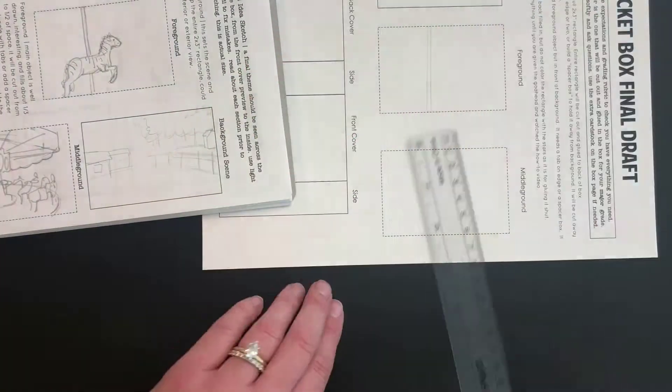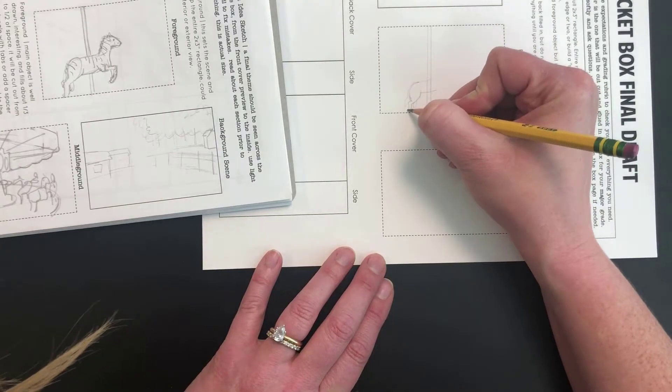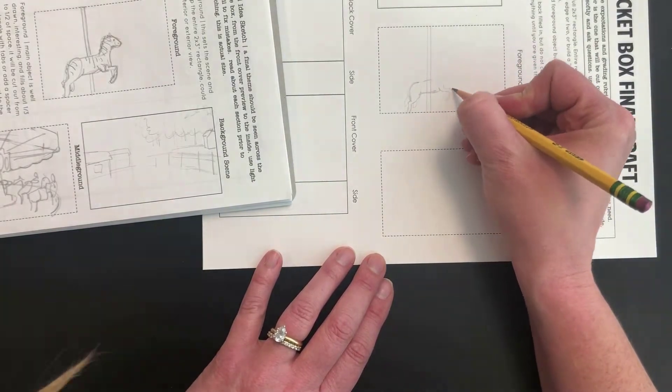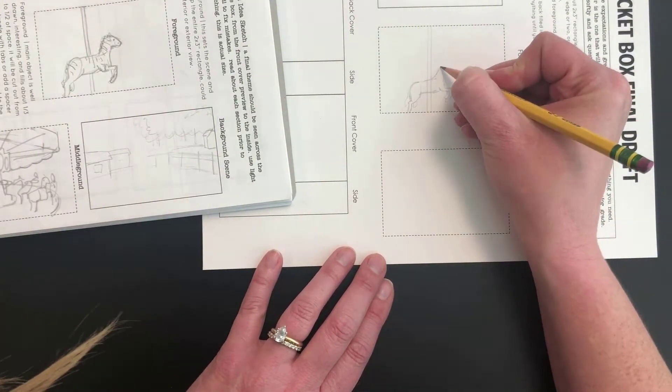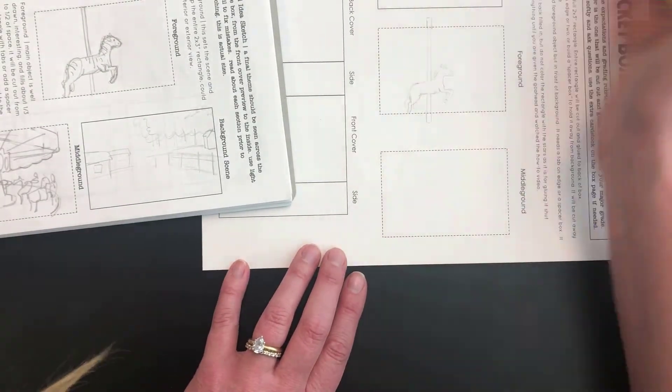For the foreground, you should have your main object be well drawn, detailed, interesting, and fill about a third or half the space. It's going to be cut out from the rectangle and either have tabs or a spacer box to help it float out and be the closest object to the viewer.